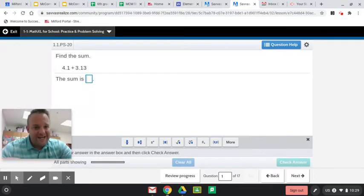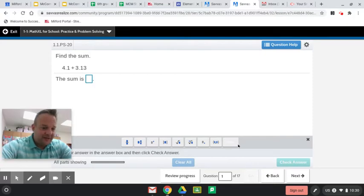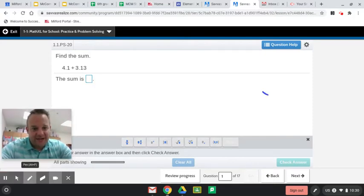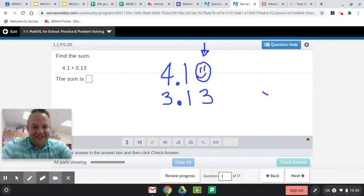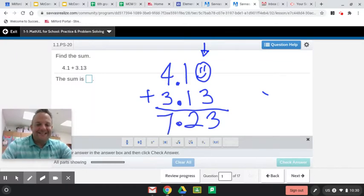We have 4 and 1 tenth plus 3 and 13 hundredths. So let's take a look at that. When we add and subtract with decimals, we want to line up the decimals and more importantly, line up the place values. So I'm lining up the place values. You'll notice right here, we need to add a placeholder zero. So I will do that. I'll put a little smiley face there and we'll add that up. Zero plus 3 is 3.